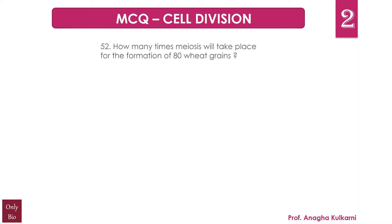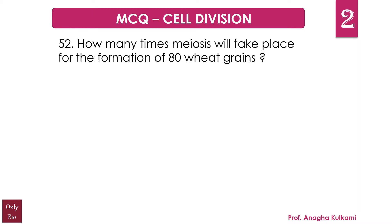Question number 52: How many times meiosis will take place for the formation of 80 wheat grains? A. 100, B. 80, C. 40, D. 99. And the correct answer for this question is A, 100.